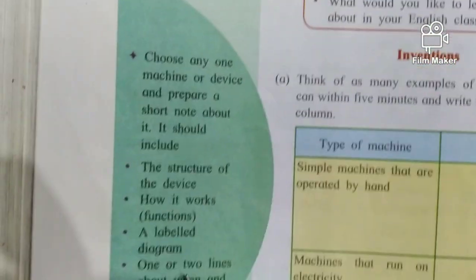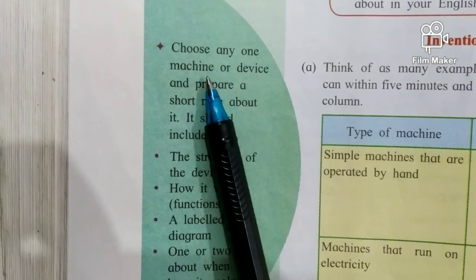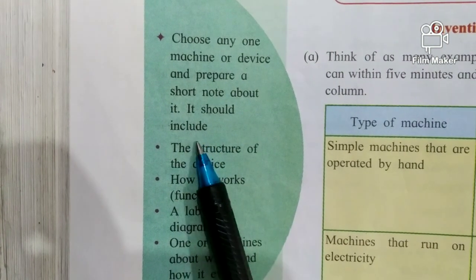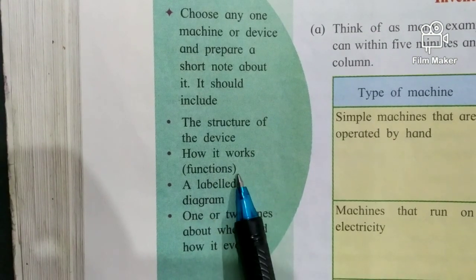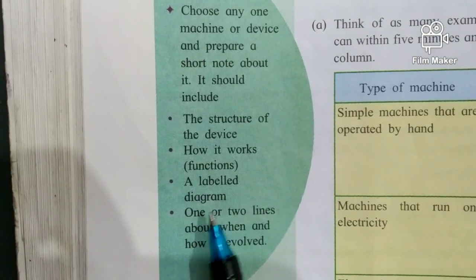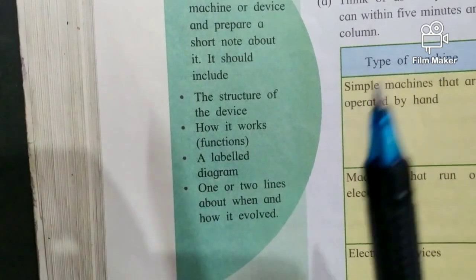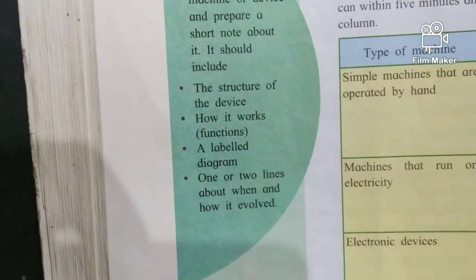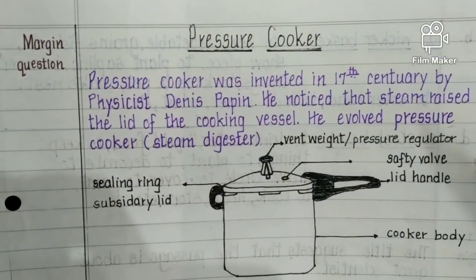Now we shall deal with the margin question. Choose any one machine or device and prepare a short note about it, including: the structure of the device, how it works, a labelled diagram, and one or two lines about when and how it evolved. I have taken one machine — the pressure cooker.